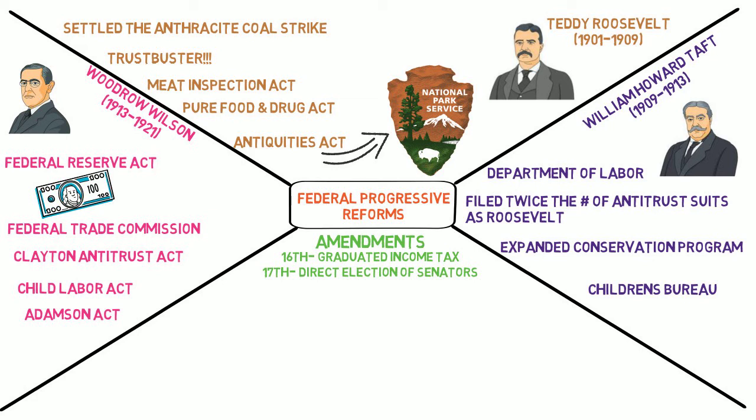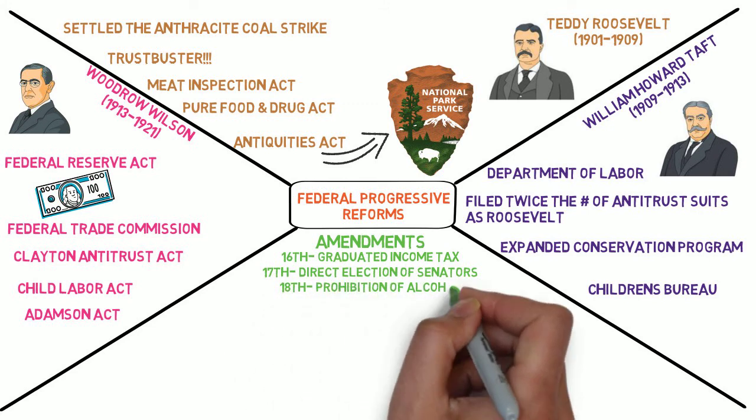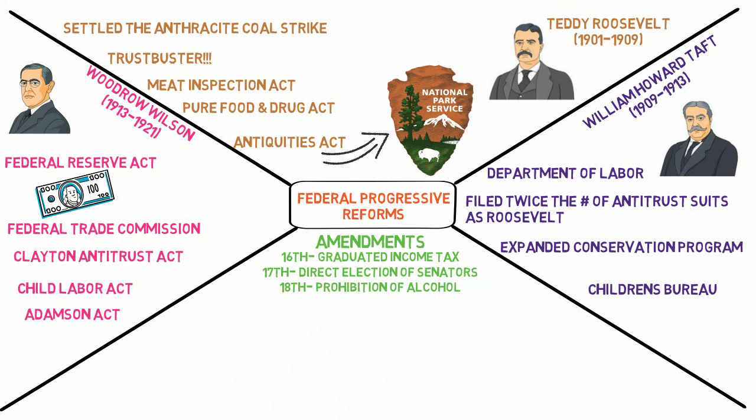To combat the public health effects of alcohol consumption, the 18th Amendment was ratified in 1920. The 18th Amendment prohibited the sale and consumption of alcohol. This amendment proved to cause more harm than good, as we'll discuss when we get to the 1920s. Eventually, it was repealed with the ratification of the 21st Amendment in 1933.